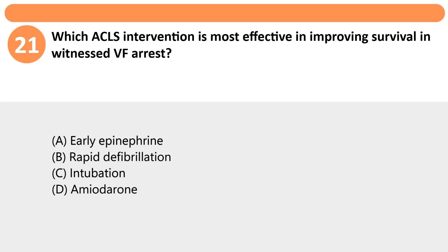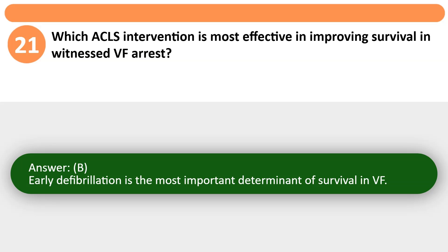Which ACLS intervention is most effective in improving survival in witnessed VF arrest? A. Early epinephrine. B. Rapid defibrillation. C. Intubation. D. Amiodarone. Answer: B. Early defibrillation is the most important determinant of survival in VF.